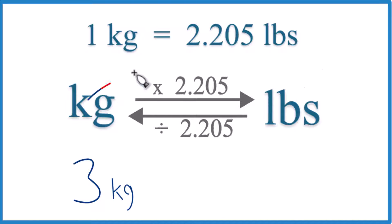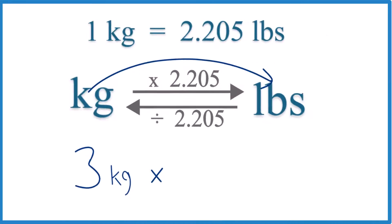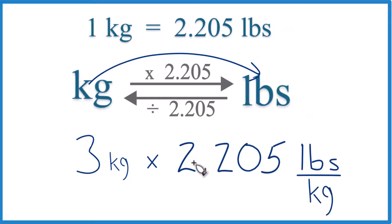We have 3 kilograms, so we're going to multiply by 2.205, like this. And note it's 2.205 pounds per kilogram. That comes from our conversion factor here.